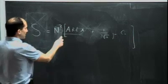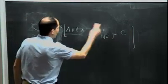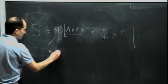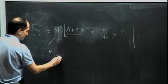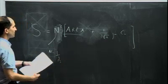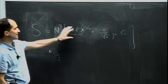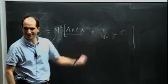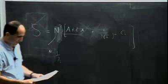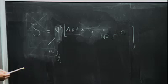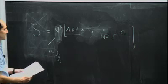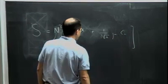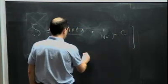Now notice that from the point of view of the bulk, N is 1 over the coupling — 1 over g_string. So all of this is classical in the bulk; it should be viewed as classical string theory in the bulk.